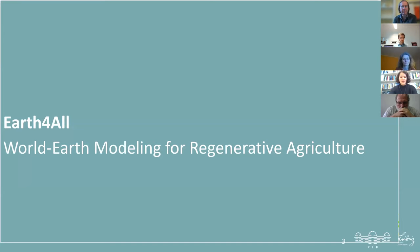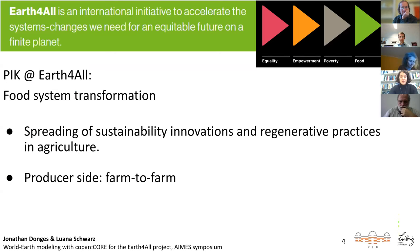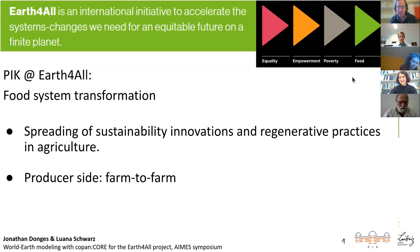I'll talk about what we are planning to do with CopernCore in the scope of the Earth for All project related to regenerative agriculture. Earth for All is an international initiative that aims to accelerate the system changes needed for an equitable future on a planet. They are trying to break this mission down into five different topics to work on global system change: equality, empowerment, positive food, and energy. It's a collaboration between the Club of Rome, the Norwegian Business School, Stockholm Resilience Center, and PIK — and the PIK group is working on food system transformation, which is why I'm here talking about agriculture.